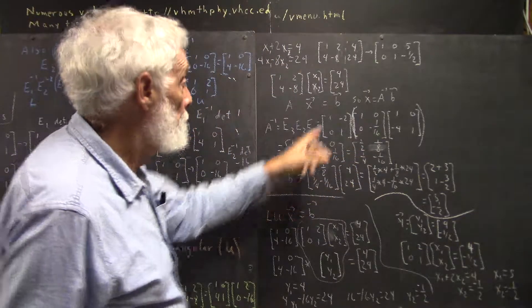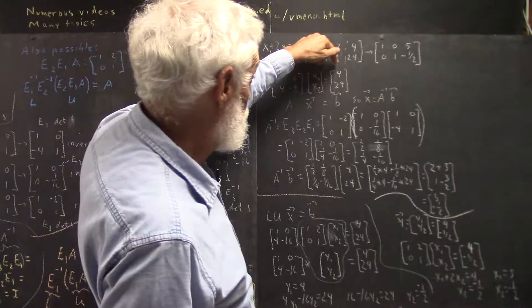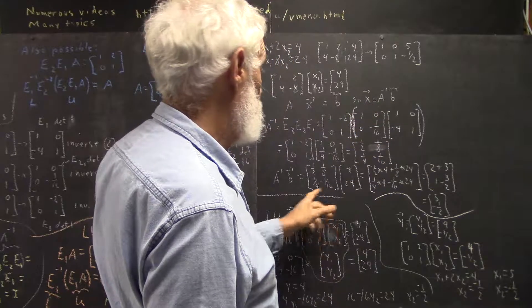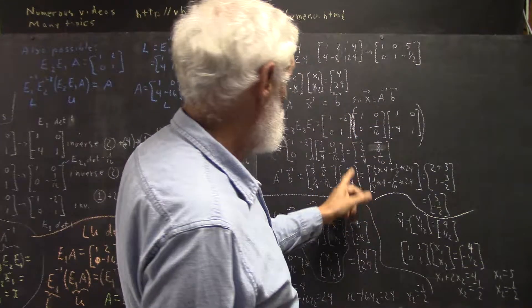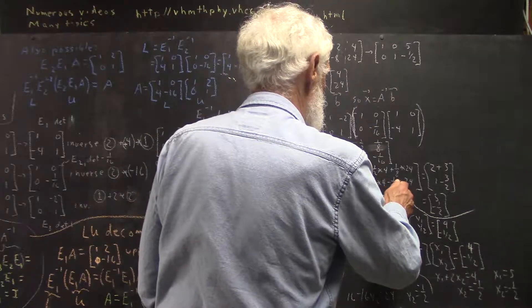This is A inverse, this is A. Then we take A inverse, this matrix, times our B vector, the 4, 24, because now our X solution is going to be A inverse times B.